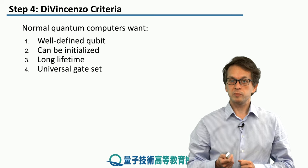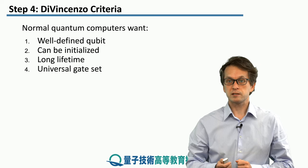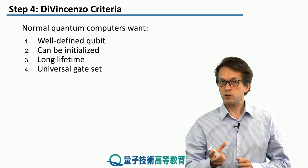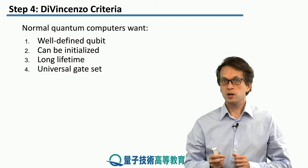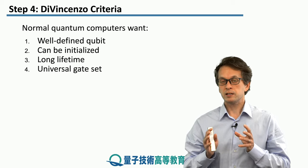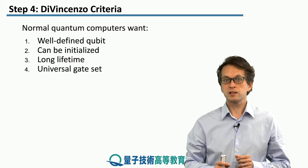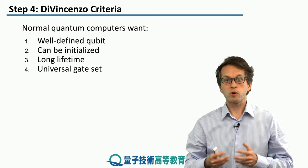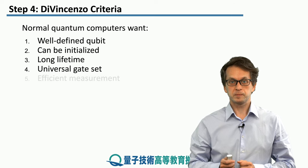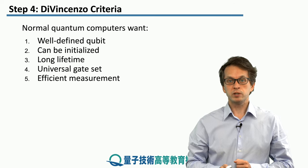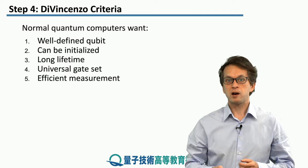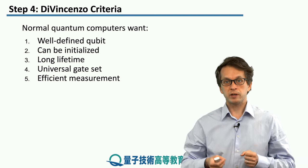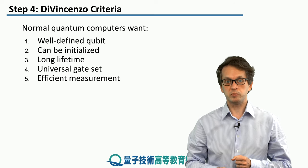Also, you must be able to implement a universal set of gates — meaning that your qubit and physical system need to implement a finite set of gates which, when put together in some order, can allow you to simulate a much more complicated evolution. And you need efficient measurements. Just carrying out and transforming the state in a quantum manner is not enough; you somehow have to extract the information at the end of the quantum computation.